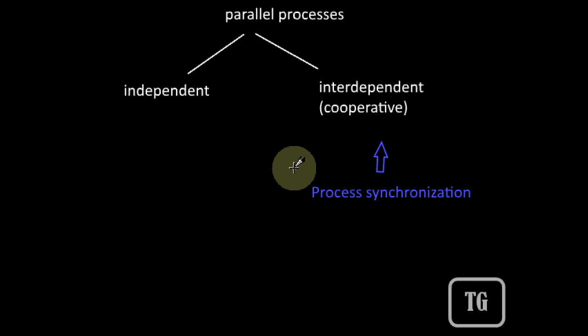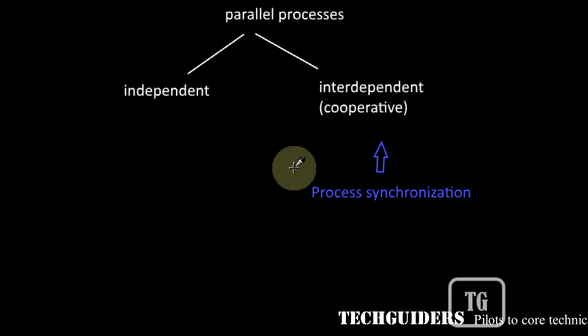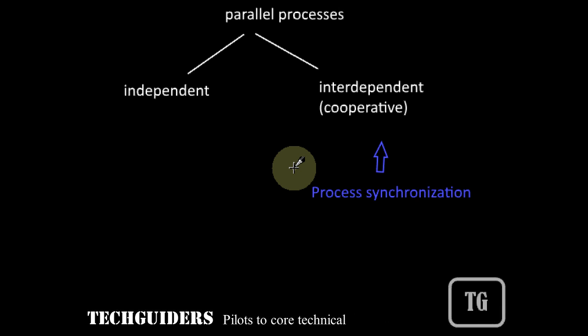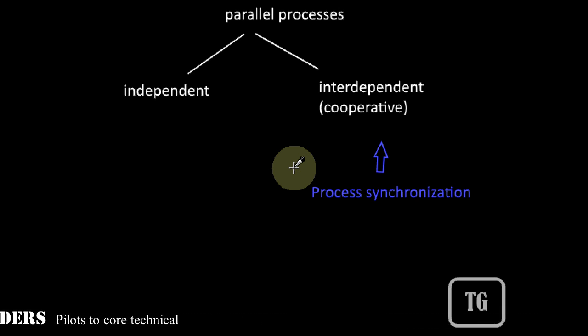In the last video, we have seen that process synchronization is required for cooperative processes to avoid some problems which may occur if such processes are executed concurrently. Let's see some of the problems associated with the concurrent execution of cooperative processes.